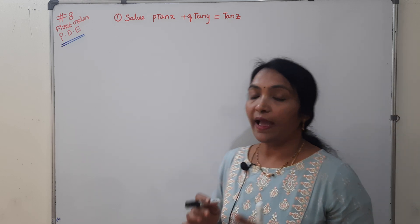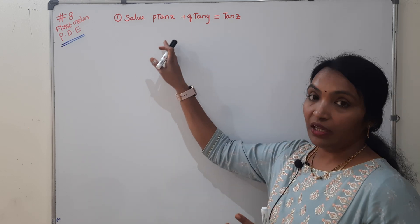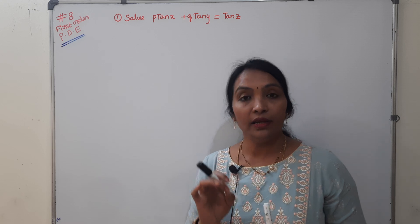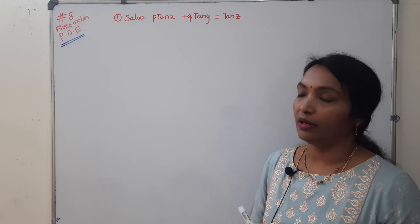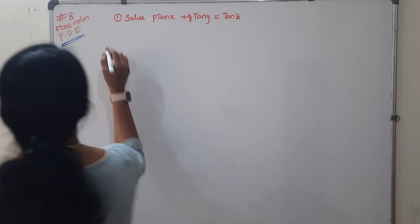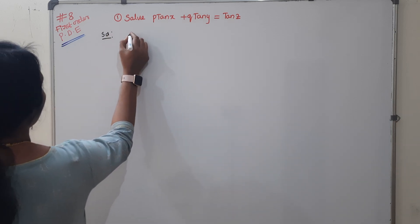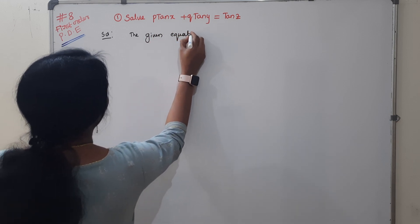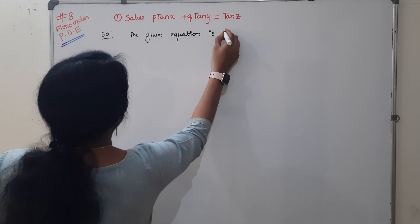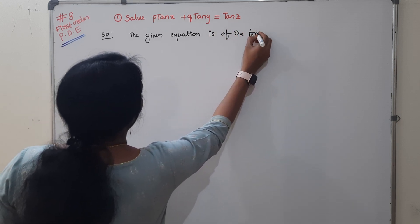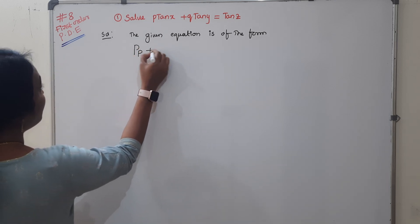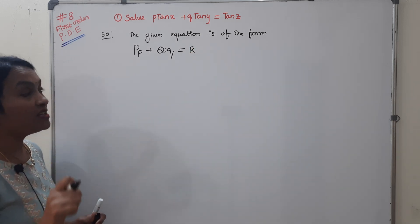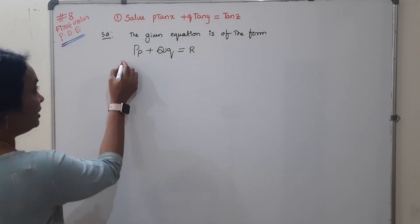This equation is linear. We can use Lagrange's method. Lagrange's linear partial differential equation is of the form Pp + Qq = R, where P, Q, and R are functions of x, y, and z. The given equation must be verified to match this form.